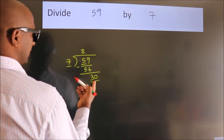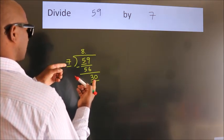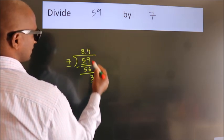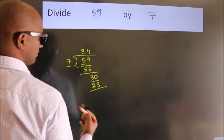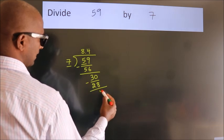A number close to 30 in 7 table is 7, 4, 28. Now we subtract. We get 2.